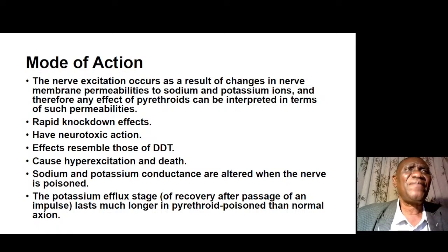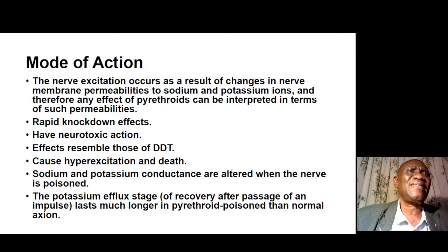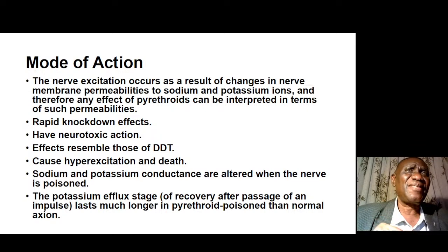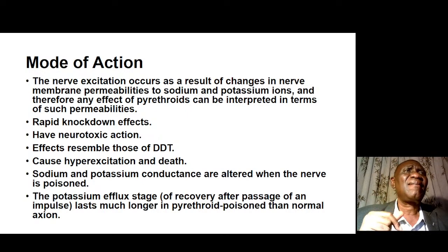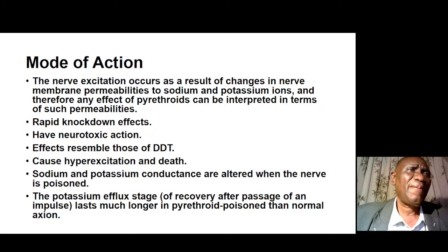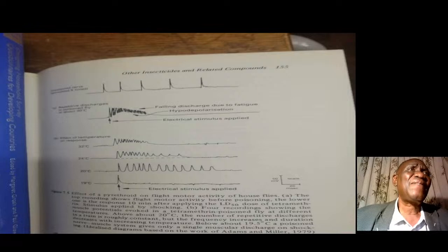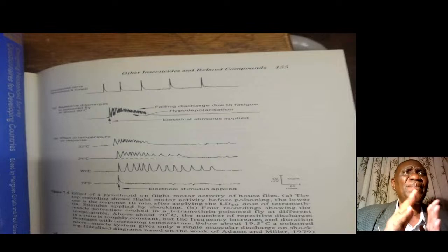Sodium and potassium conductance are altered when the nerve is poisoned. The potassium efflux stage of recovery after passage of an impulse lasts much longer in pyrethroid-poisoned nerves than in normal nerves. We can measure the electrical signals — the first line represents normal peaks, and when the insect is affected you have peaks very close together, indicating the insect has been poisoned.